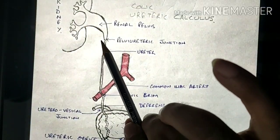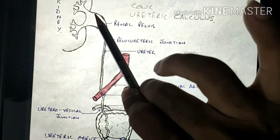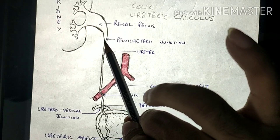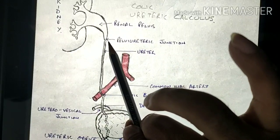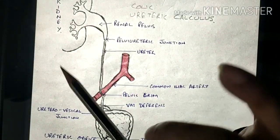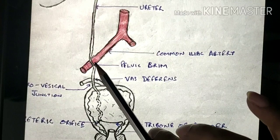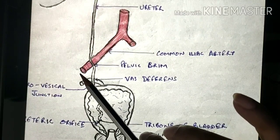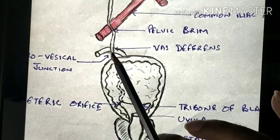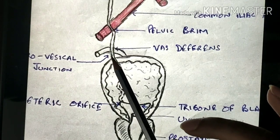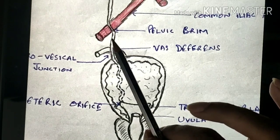The three narrowings of the ureter are: first, the pelvi-ureteric junction where the renal pelvis tapers into the ureter; second, near the pelvic brim where it is crossed by the common iliac artery; and third, the uretero-vesicle junction where the ureter enters the base of the bladder — this is the narrowest portion of the entire ureter.